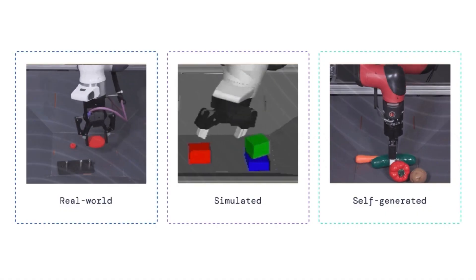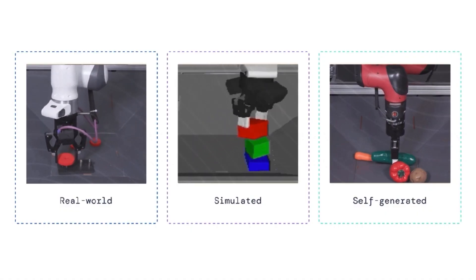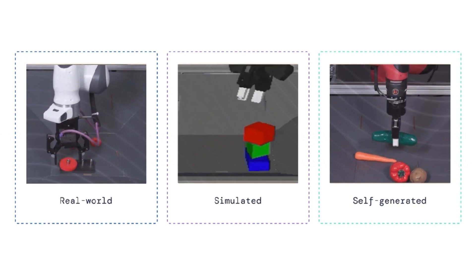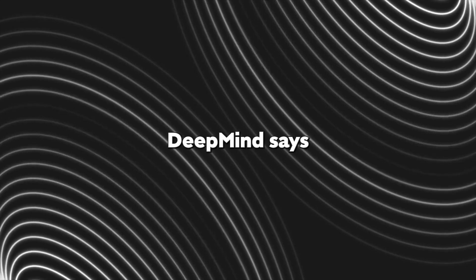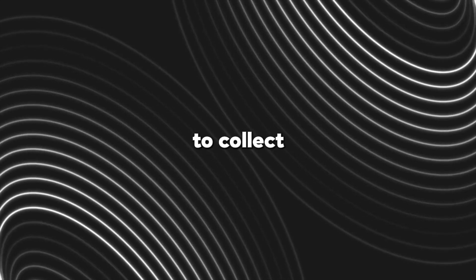RoboCat managed to successfully pick up gears with an entirely new arm 86% of the time, and it only observed 1,000 demonstrations being done by humans. DeepMind says that it took a small amount of time to collect this much data.